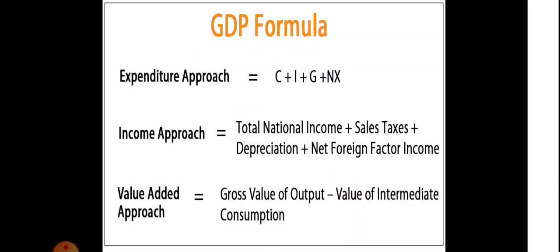The income approach formula for GDP is: total national income, plus all taxes, plus depreciation — for example, if you have a car, its value decreases every year — plus net foreign factor income. For the value-added approach: for example, if a pen costs 100 rupees and the value of intermediate consumption is 10 rupees, then the value added is 90 rupees. So GDP using the value-added approach accounts for 90 rupees in this case.